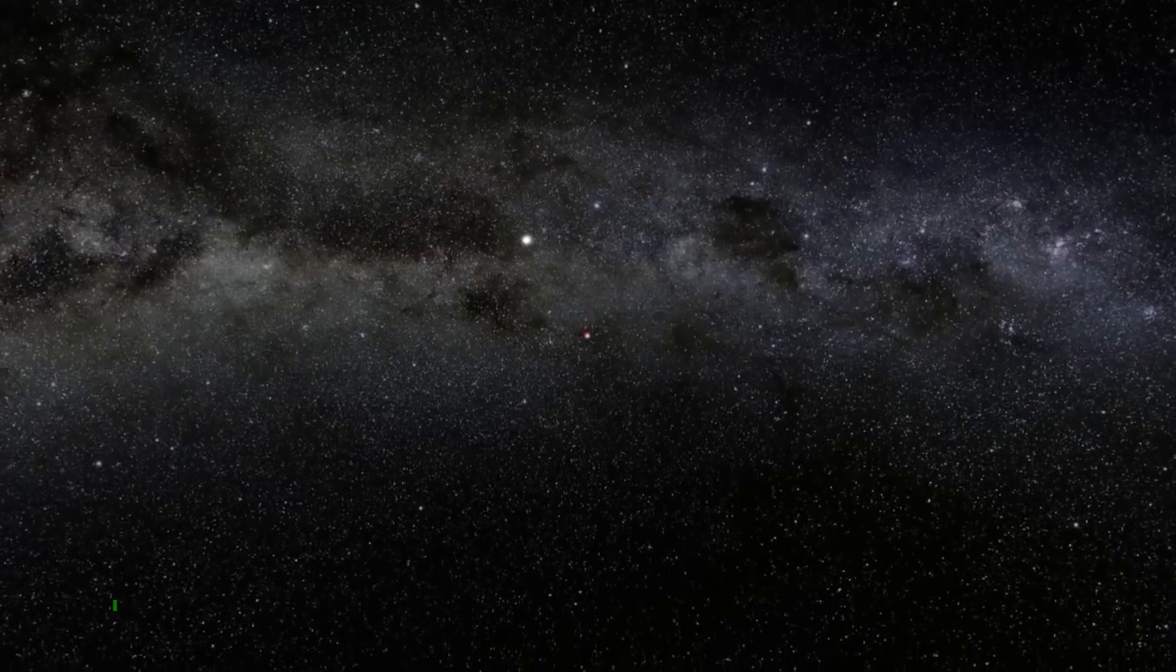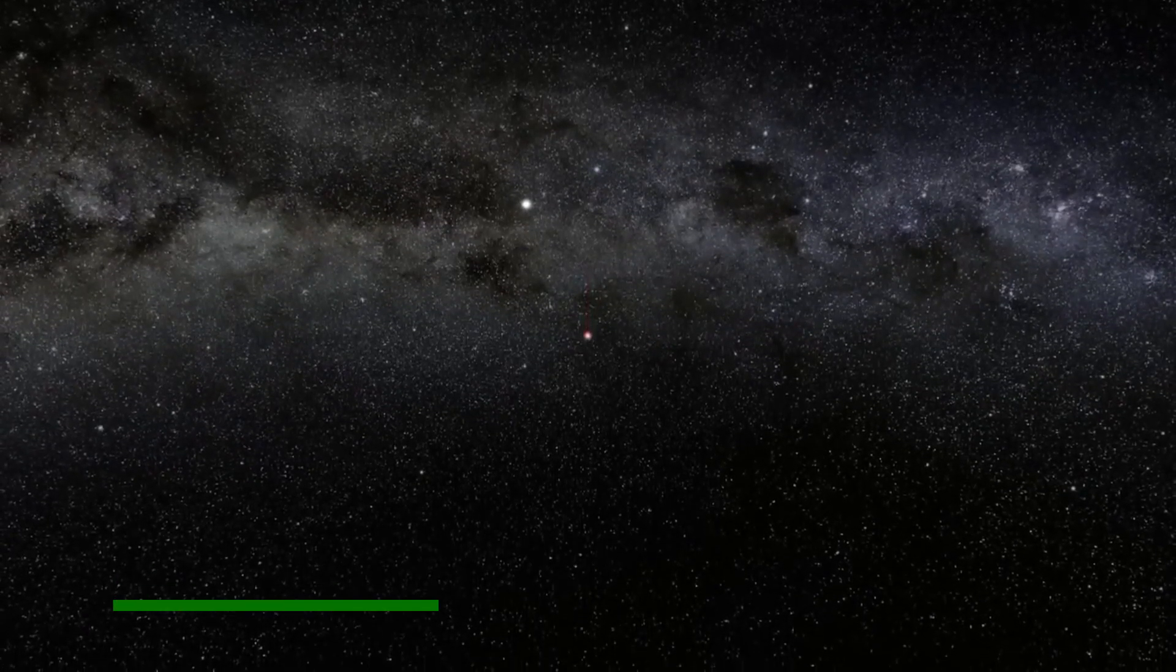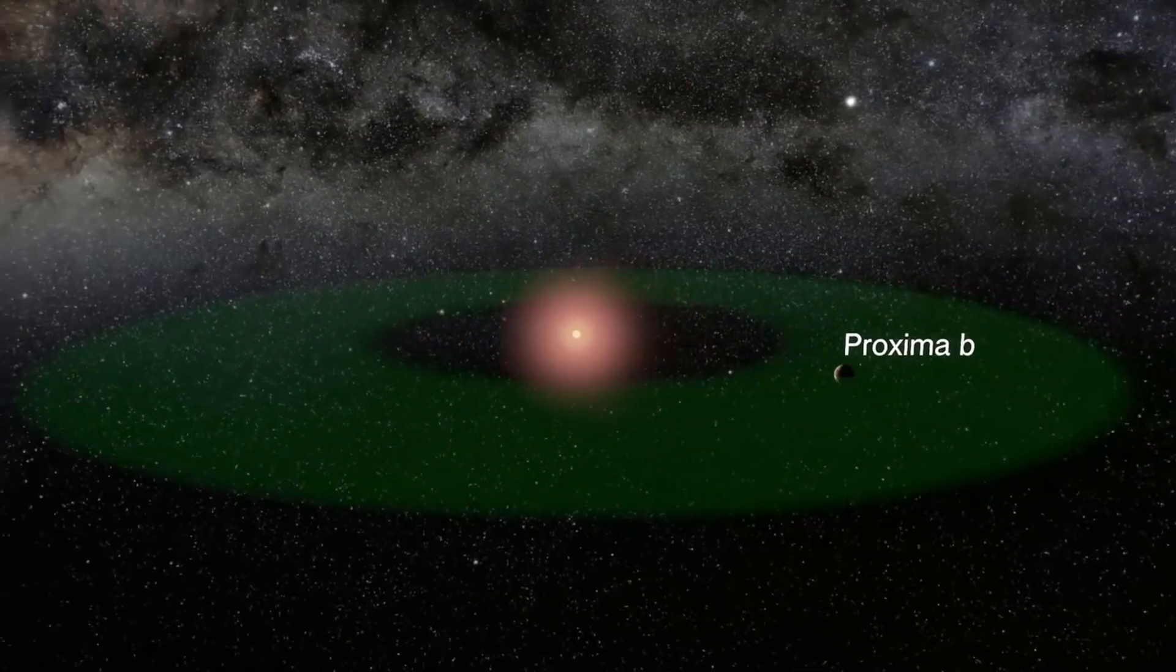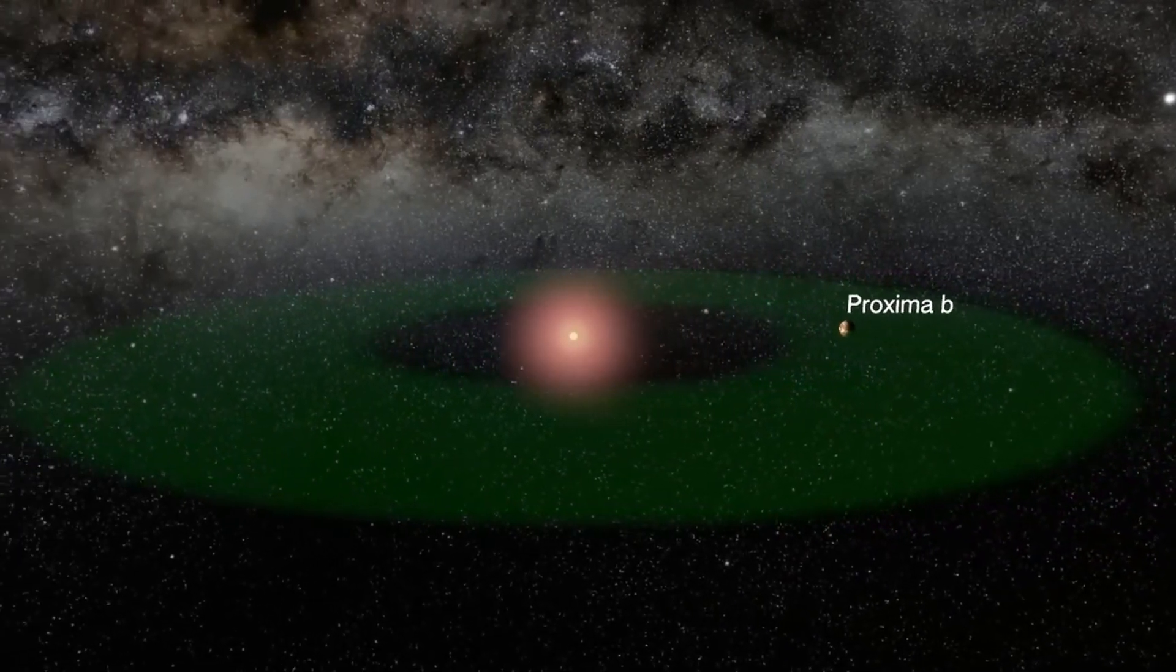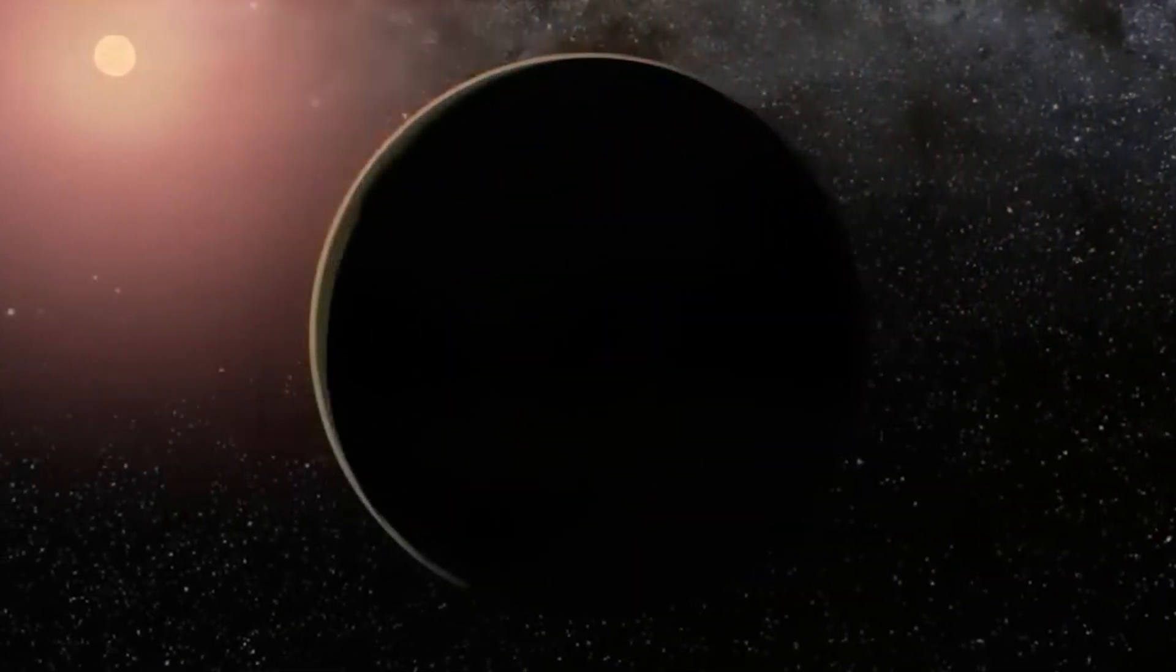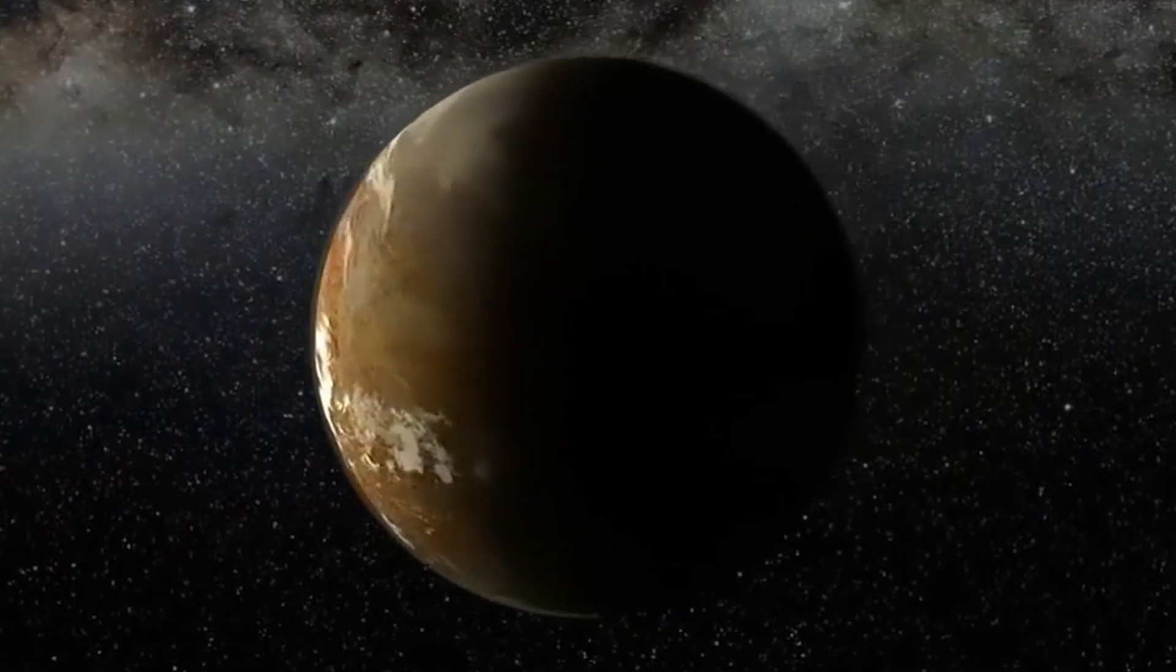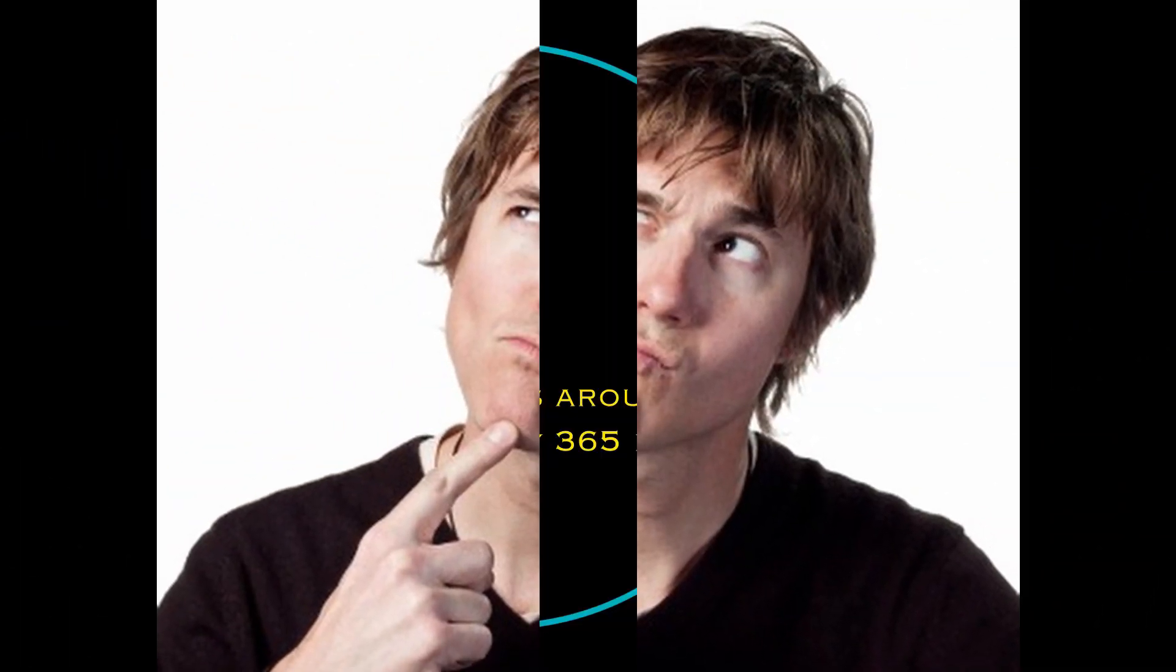Proxima Centauri has two confirmed exoplanets: Proxima Centauri B and Proxima Centauri C. One of its two planets, Proxima Centauri B, is quite famous and is also the closest known exoplanet to us. On top of it all, it is one of the potential candidates for the existence of life outside of our solar system.